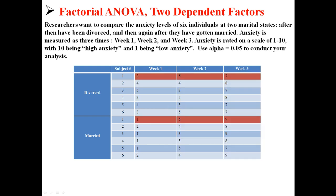It's kind of hard to display in a table two dependent factors like this, but realize that everything in red is the same person. We have subject one measured one, two, and three weeks after they got divorced, and also subject one measured one, two, and three times after they got married. There are really only six people in this analysis — six individuals, even though we have 36 total scores.